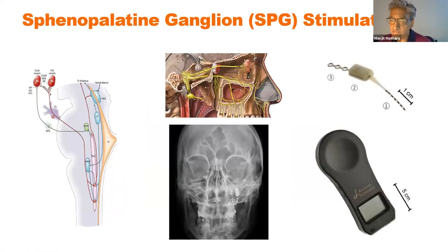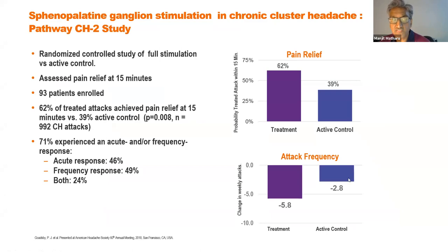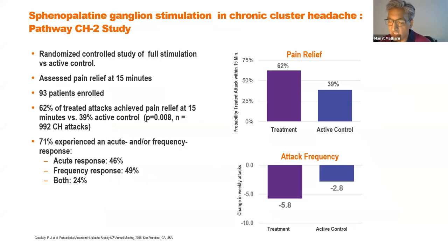Sphenopalatine ganglion stimulation: the cranial autonomic features are mediated through trigeminal activation leading to parasympathetic activation via the SPG. ATI developed a micro-electrode placed over this ganglion. In the CH2 study, 71% of patients found it beneficial — 46% could abort an attack, 49% could reduce attack frequency, and 24% could do both. Unfortunately ATI went bankrupt but has been bought out, so this device may still reach the market in some form.